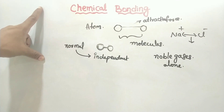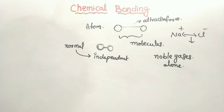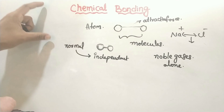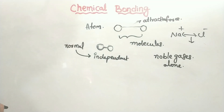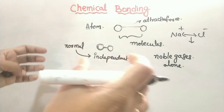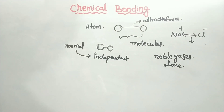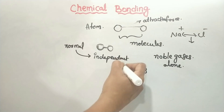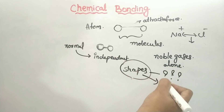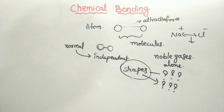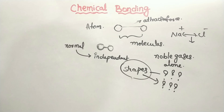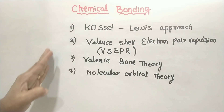In this chemical bonding chapter, we have a few questions. Why do atoms combine with other atoms? That is why there are different molecules in different shapes. Why do these shapes exist? In this chemical bonding chapter, we have four theories to learn about how to form these molecules.